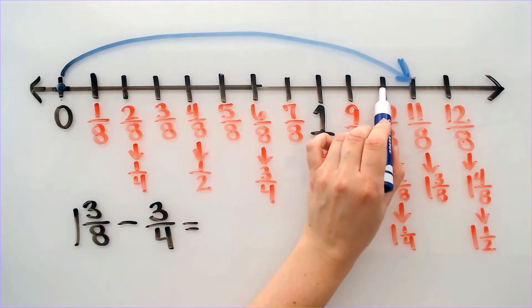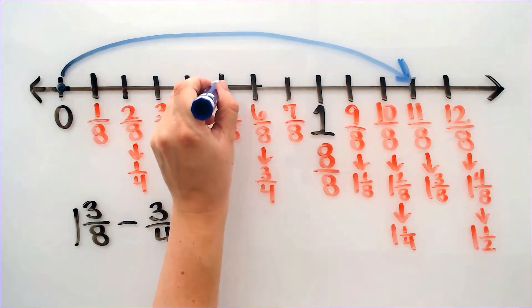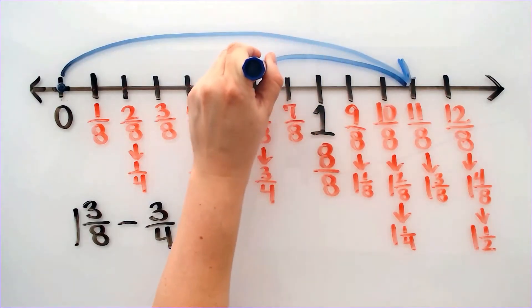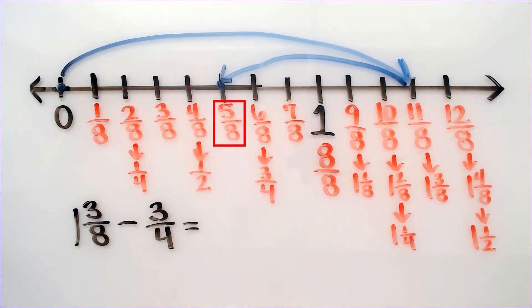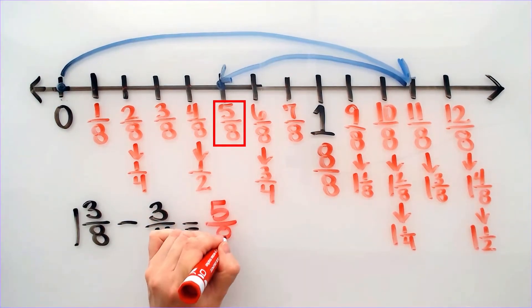So it goes 1, 2, 3, 4, 5, 6. And I will end up, so if I go back, I will end up at 5 eighths. That tells me that my answer is 5 over 8.